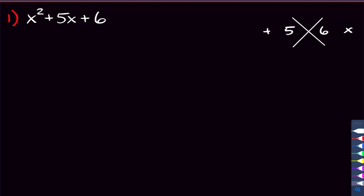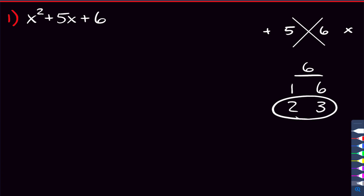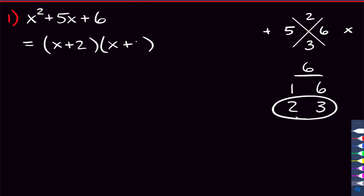If you're having trouble thinking of those two numbers, start with the multiplication. What are some numbers that multiply to be 6? We know 1 times 6 is 6, but those don't add to be 5. What about 2 and 3? Those multiply to be 6 and also add to be 5, so those are our two numbers. I'll put 2 here and 3 here, write my factors out, and put 2 and 3 in. That is my answer for problem 1.